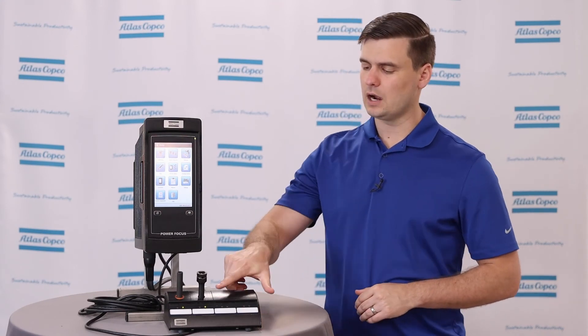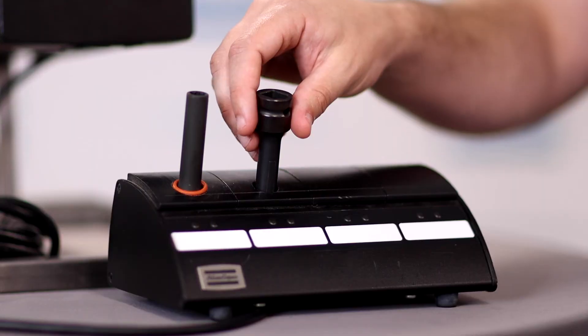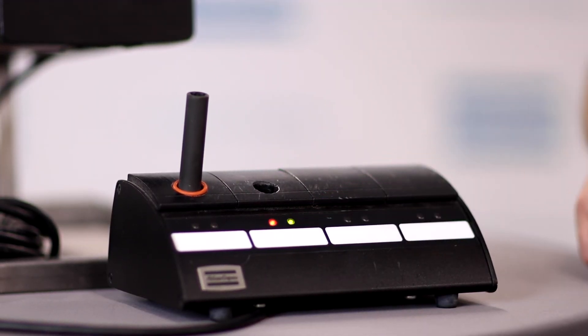As you can see here, our socket tray is blinking, and when I select a socket, it's actually going to select that tightening program on the controller itself.